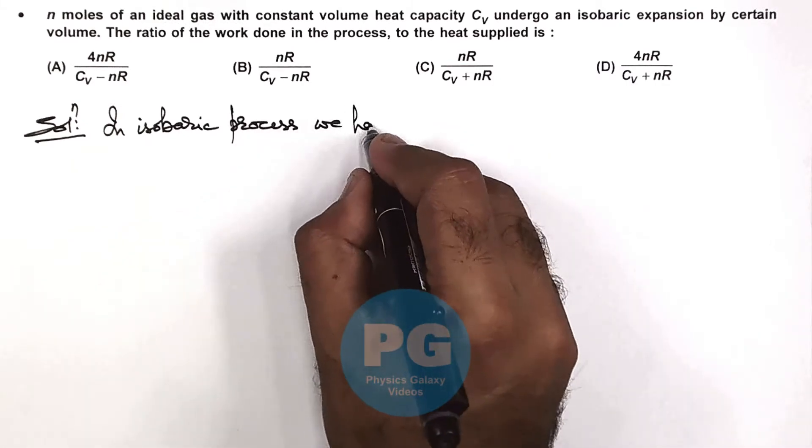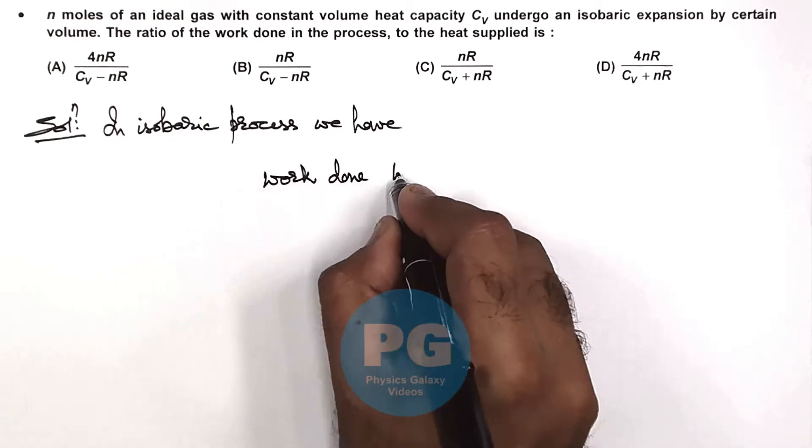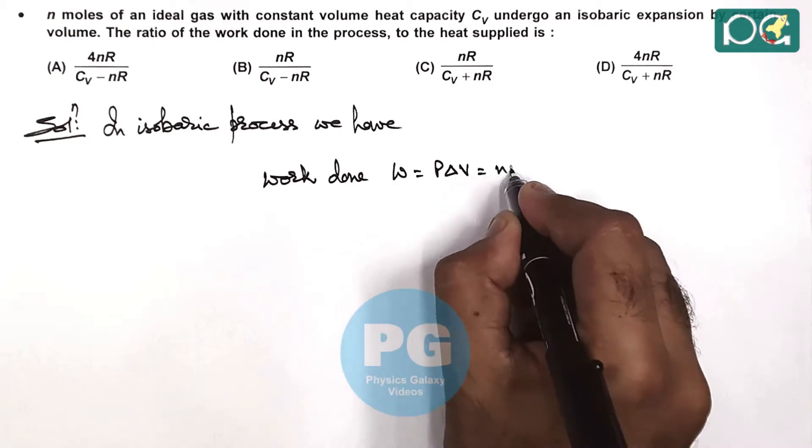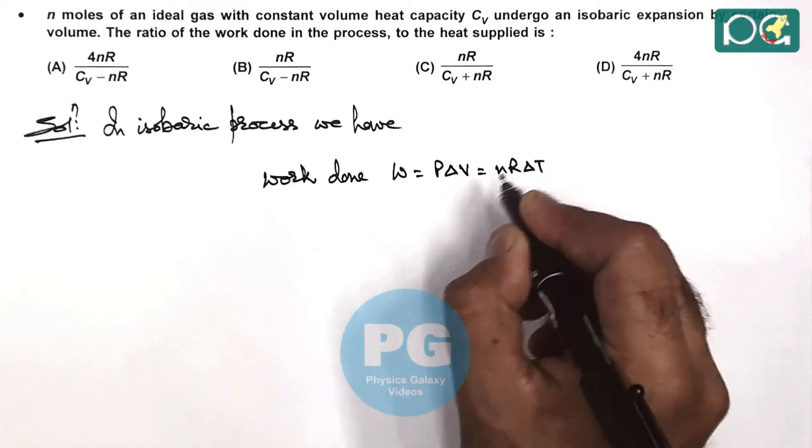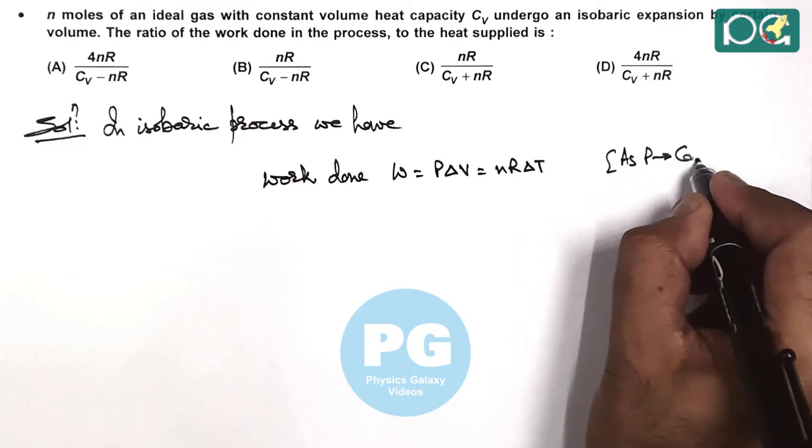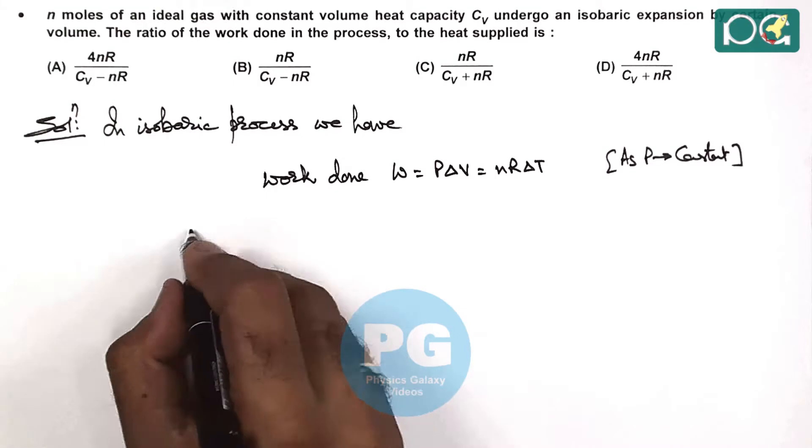work done can be directly given as P∆V, or this can be written as nR∆T since pressure remains constant. So we have the work done.